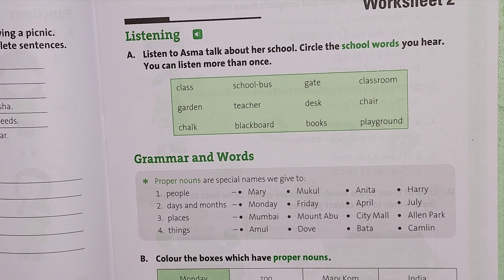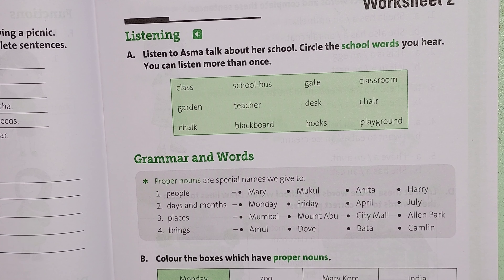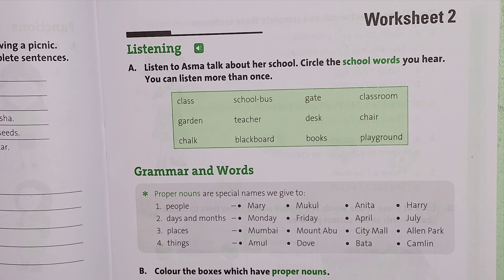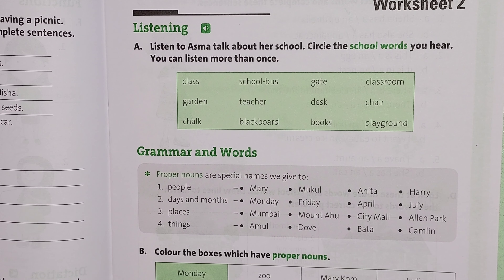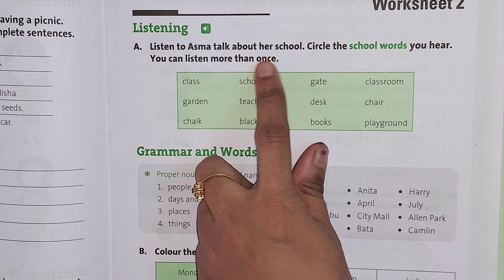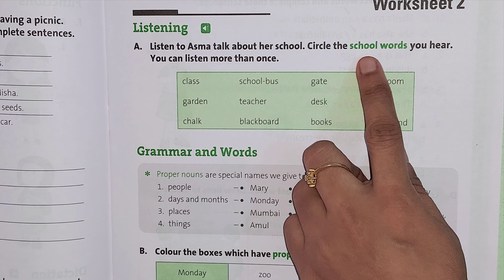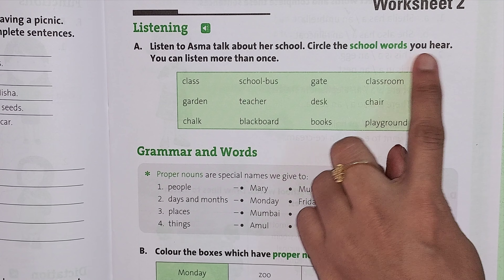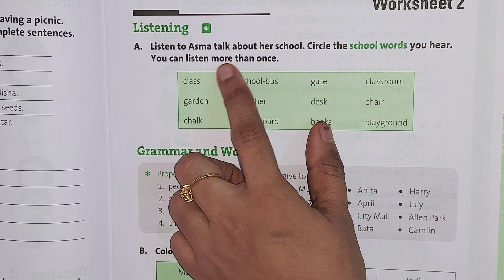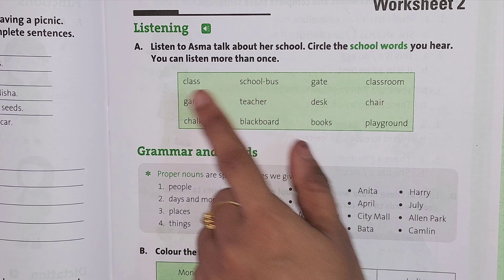Namaste. In revision with Priti, we are going to study English grammar textbook. Shall we start, Priti? Worksheet 2. Listen to Asma talk about her school. Circle the school words you hear. You can listen more than once.